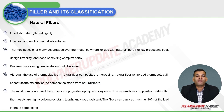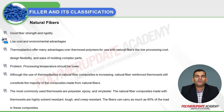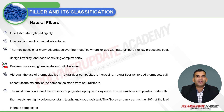Natural fibers have good fiber strength and rigidity, low cost, and offer environmental advantages. Thermoplastics offer many advantages over thermosetting polymers for use with natural fibers, including low processing cost, design flexibility, and suitability for molding complex parts. However, processing must be done at very low temperatures because the material is mainly composed of cellulose and hemicellulose, and stability above 150°C is a significant problem.